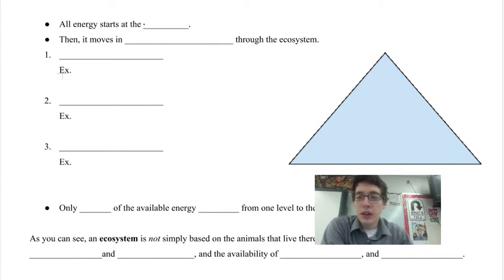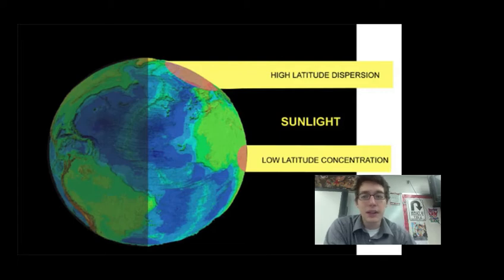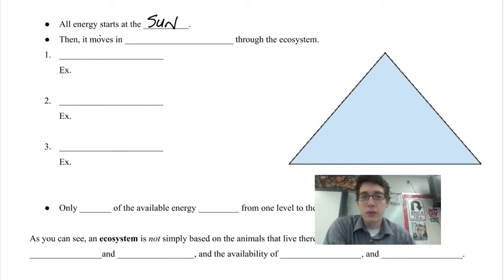So the first thing we need to know is that all energy starts at the sun. We've looked at this already in the first podcast where the angle of the sun will give us different climate regions on the planet and how that affects the biomes that are available for animals to live and develop in. But all of that energy starts somewhere, and it starts at the sun.